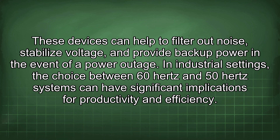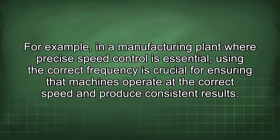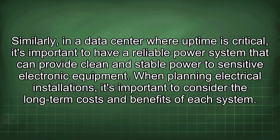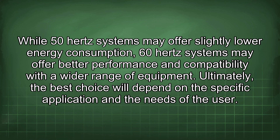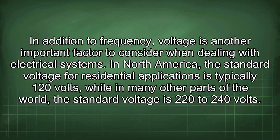In industrial settings, the choice between 60Hz and 50Hz systems can have significant implications for productivity and efficiency. In a manufacturing plant where precise speed control is essential, using the correct frequency is crucial for ensuring machines operate at the correct speed and produce consistent results. Similarly, in a data center where uptime is critical, it's important to have a reliable power system that can provide clean and stable power to sensitive electronic equipment. When planning electrical installations, it's important to consider the long-term costs and benefits of each system.